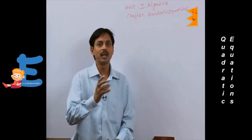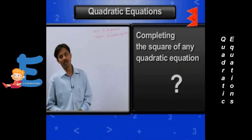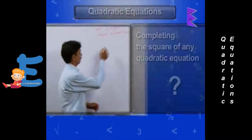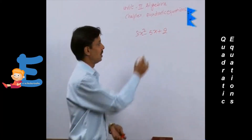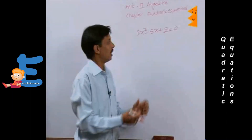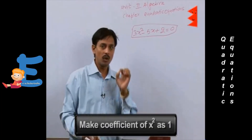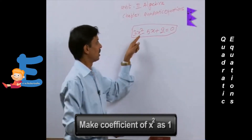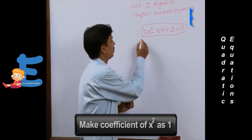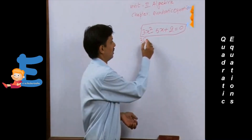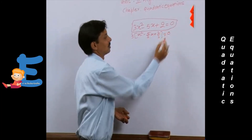Now we are taking an example of how to solve a quadratic equation by the method of completing the square. Suppose 3x² - 5x + 2 = 0. The first step is to make the coefficient of x² equal to 1. Here the coefficient of x² is 3, so we take 3 as common, giving x² - (5/3)x + 2/3 = 0.